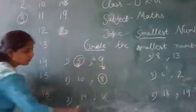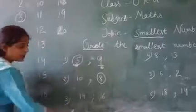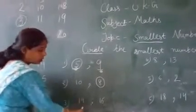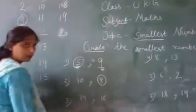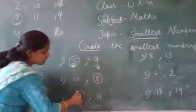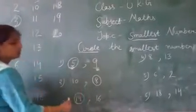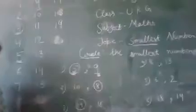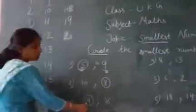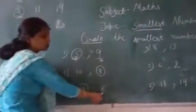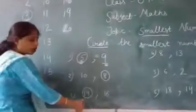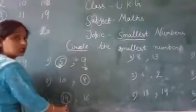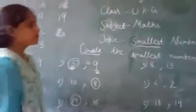Third one is 14 and 16. These are two numbers. 14 is smaller than 16 because 14 comes before 16 when we count. So, 14 is the smallest number.